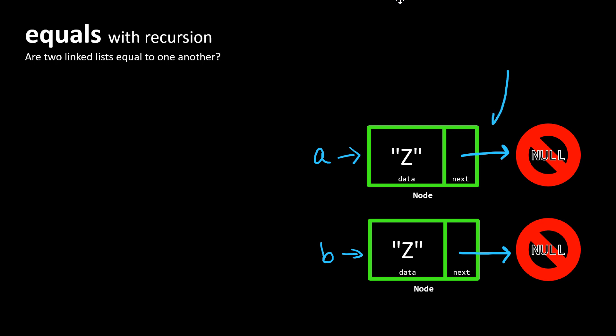We know that because the next property of each of these nodes points to null, and the data contents in each of these nodes is equal to one another. So we would say that A and B are equal to one another as linked lists.